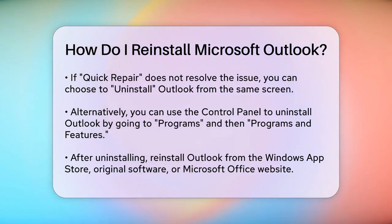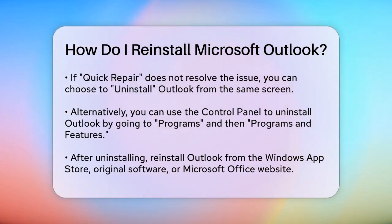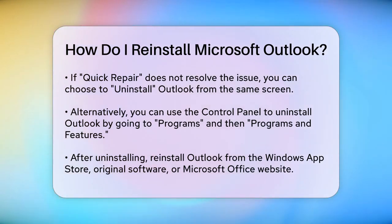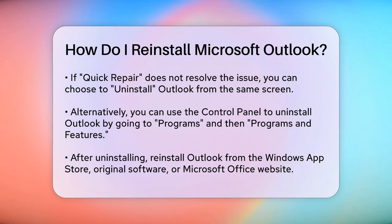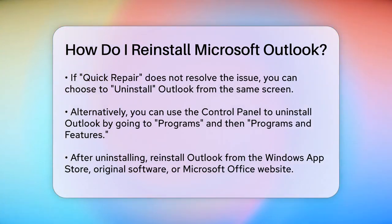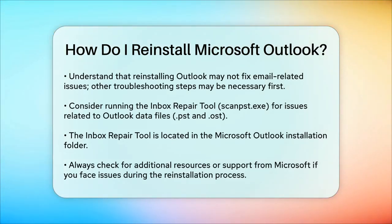Before you start the process, it's a good idea to understand why you might need to reinstall. Often, people think reinstalling Outlook will fix email-related issues, but this isn't usually the case. If you're experiencing problems like a yellow triangle icon and an error message saying 'Cannot start Microsoft Outlook,' you might want to try other troubleshooting steps first, such as running the Inbox Repair Tool (SCANPST.EXE) or starting Outlook in Safe Mode. The Inbox Repair Tool can fix issues with your Outlook data files (.pst and .ost).